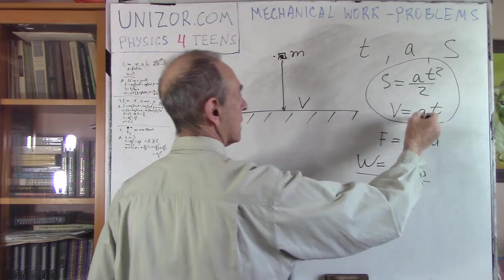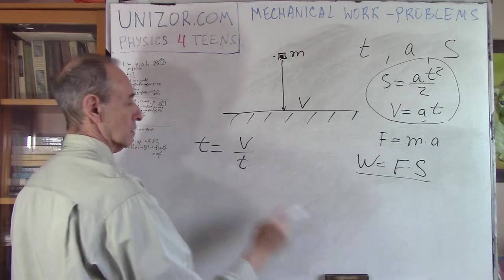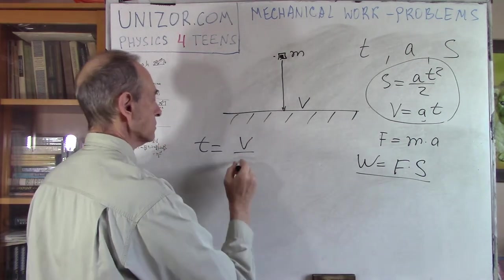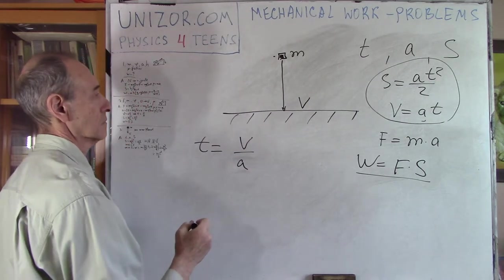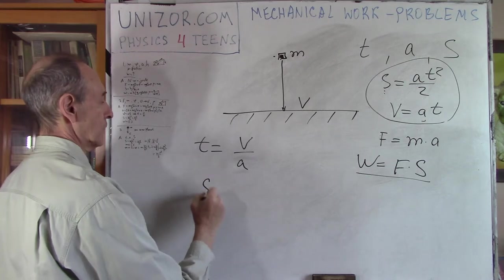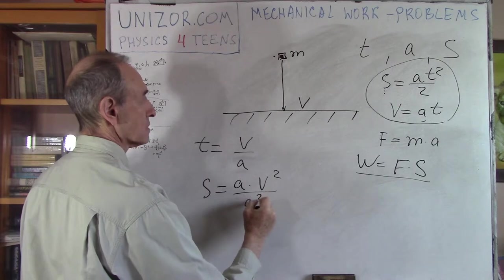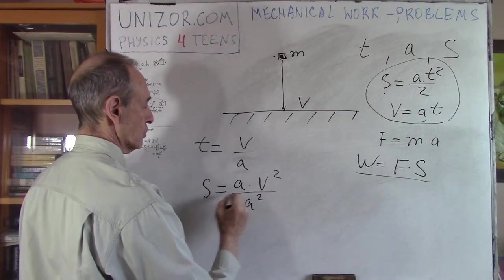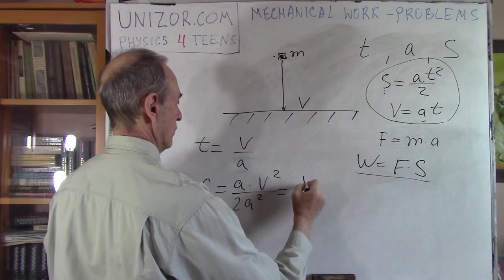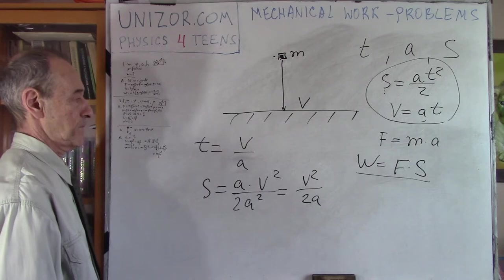Obviously, since we have only two equations with three unknowns, we will have to probably use one of the unknowns as a base and calculate others. Like, for instance, we will take a as an unknown. Well, then, t is equal to v divided by a. Now, if I will substitute it to this, I will have s is equal to a, t squared, which is v squared divided by a squared, and divided by 2, which is equal to v squared divided by 2a.